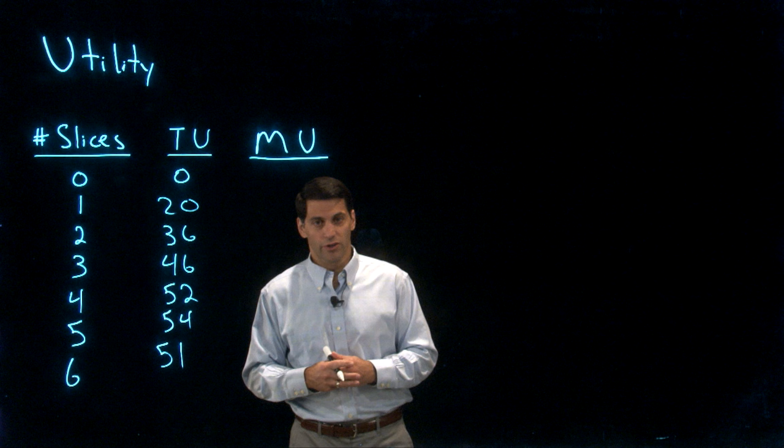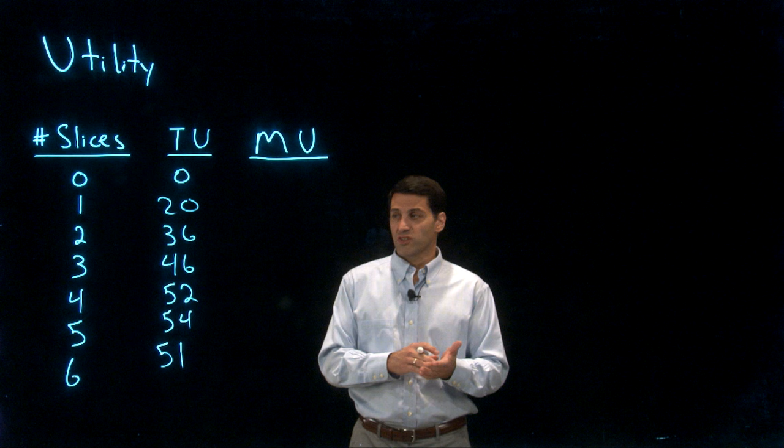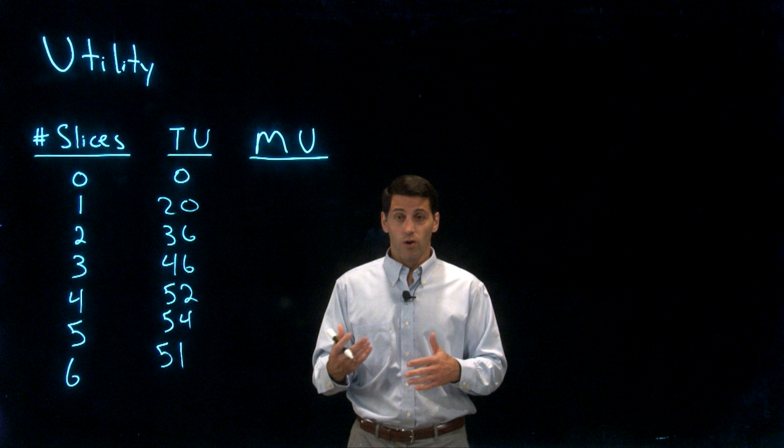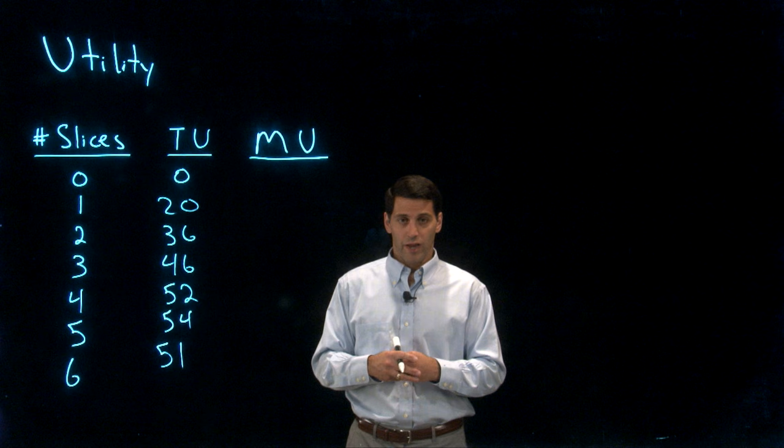The other thing that constrains consumers' decision making — what they can actually consume — is the price of the goods they like to consume. It's not just about income, but how far that income goes. To understand that, we need a sense of how expensive all the goods and services are that consumers want to buy, and we'll turn to that in our second video.